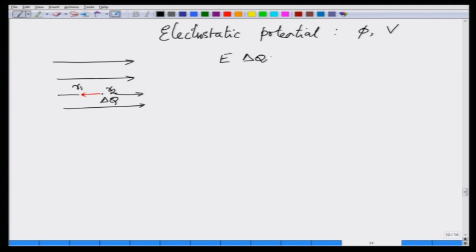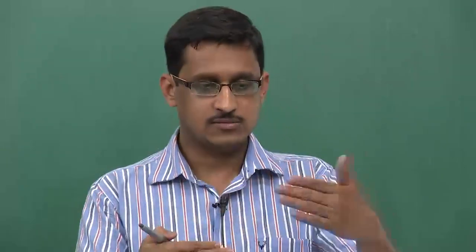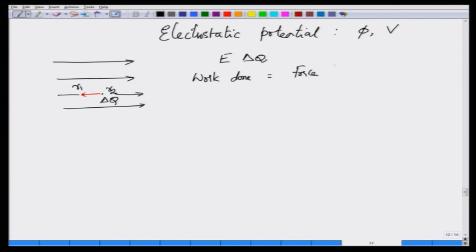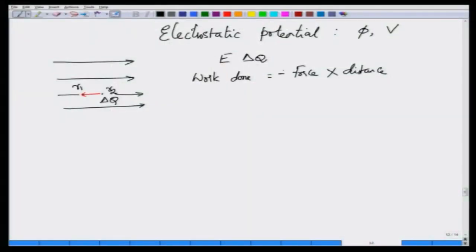The force acting on the charge delta Q is E times delta Q. If I have to move the charge from one point to another, I have to perform some work. I am actually moving this charge against the field — from point R2 to point R1 against the field. The field is pointing to the right, but I am trying to move to the left. So I have to expend some energy, I have to perform some work in order to move this charge. This is work done against the field.